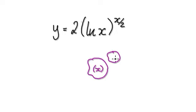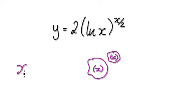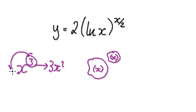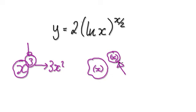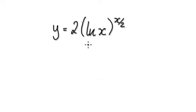This bubble here somehow contains x, and this bubble here somehow contains x. So this is not the same as x to the power of 3. When you differentiate x^3, it's simply 3x squared — you move the power down. But this is not the same, because here you've got a variable to the power of another variable, not a constant. So be careful with that.